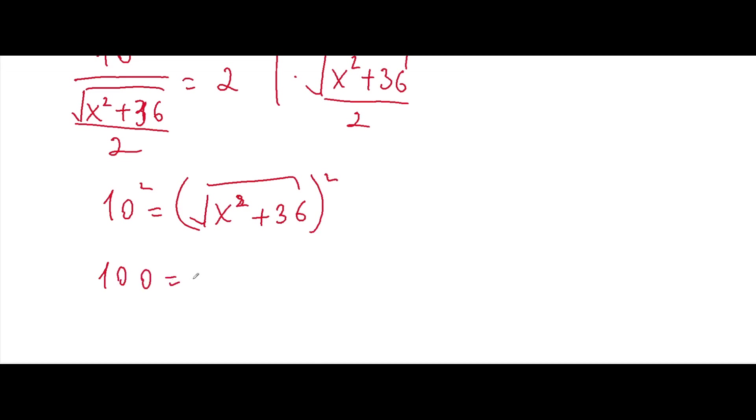We'll get here 100 will be equal to x squared plus 36. Here x squared will be equal to, here we will subtract on both sides 36.